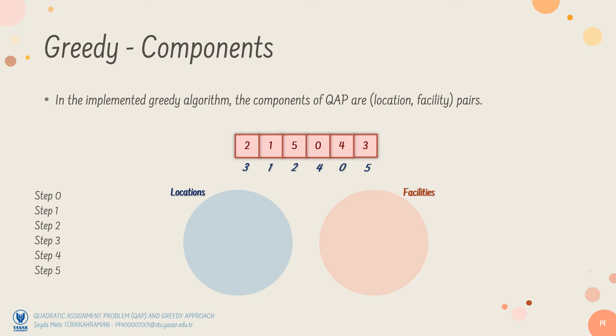Then, the location-facility pairs are ordered according to the locations to have a permutation of facilities.